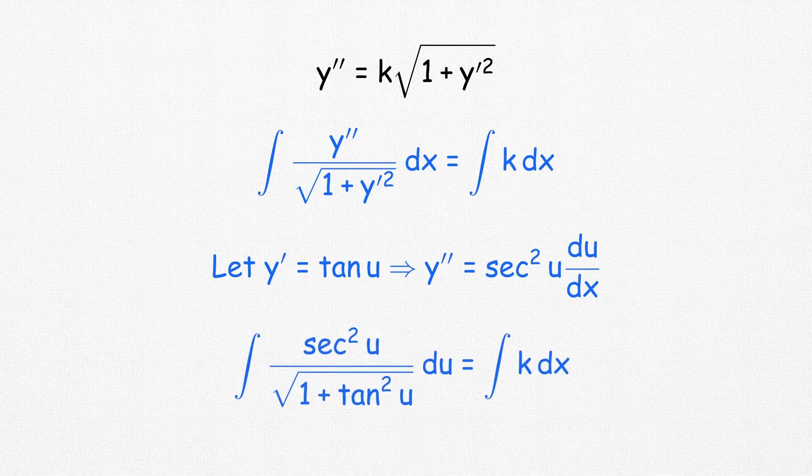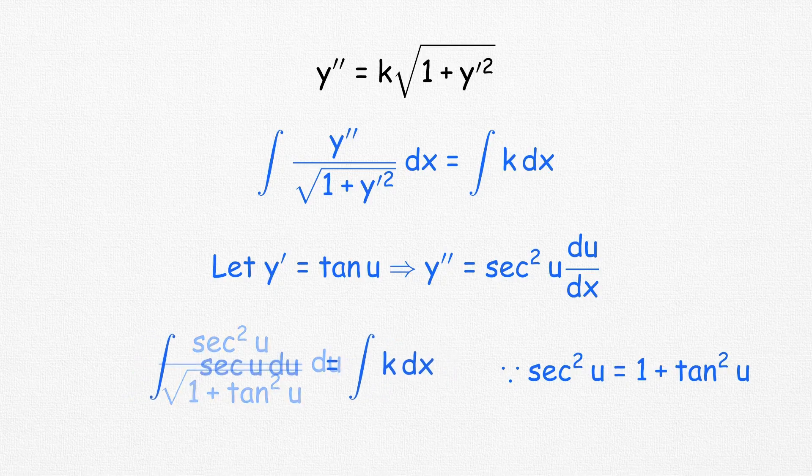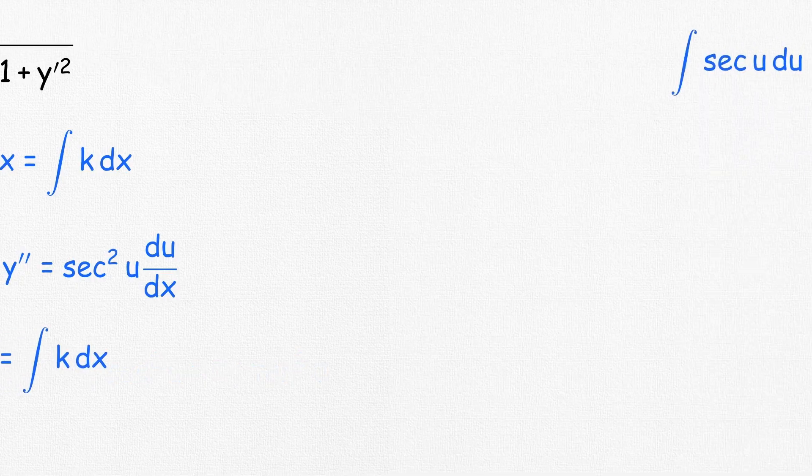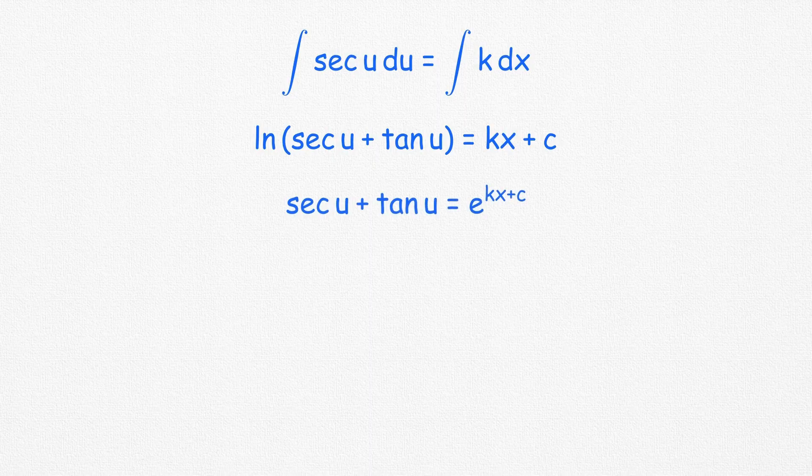Substituting this into the equation, it simplifies to the integration of sec u du on the left, while the right-hand side remains a constant k. The integral of sec u is the natural logarithm of sec u plus tan u. Converting it into exponential form, we get this equation.